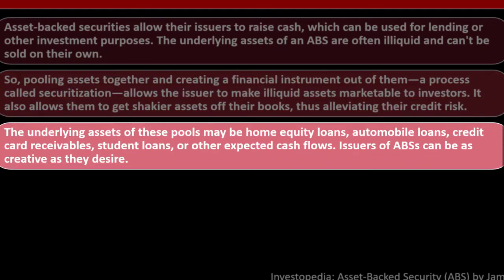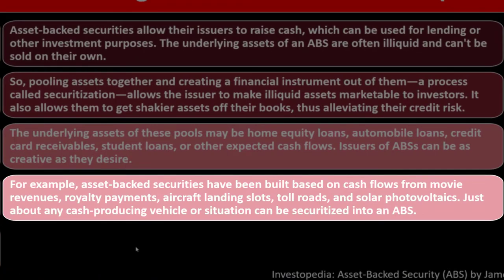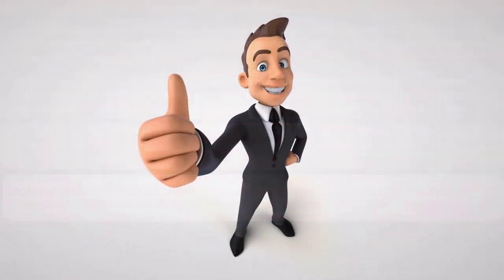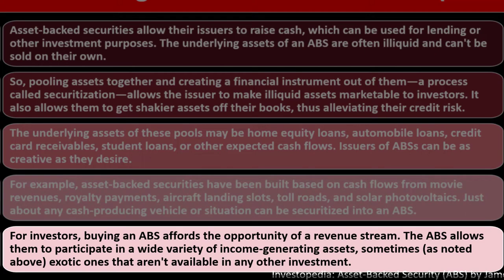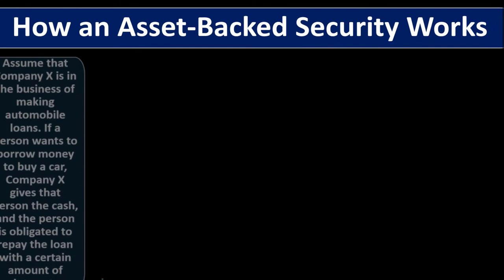It also allows issuers to get shakier assets off their books, alleviating their credit risk. The underlying assets of these pools may include home equity loans, automobile loans, credit card receivables, student loans, or other expected cash flows. Issuers can be creative — ABS's have been built on cash flows from movie revenues, royalty payments, aircraft landing slots, toll roads, and solar photovoltaics. Just about any cash-providing vehicle can be securitized into an ABS, offering investors a wide variety of income-generating assets.